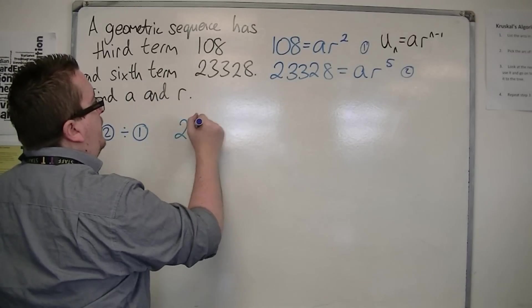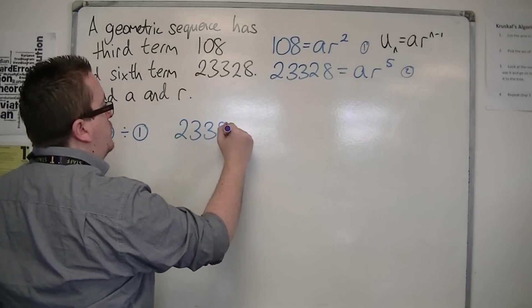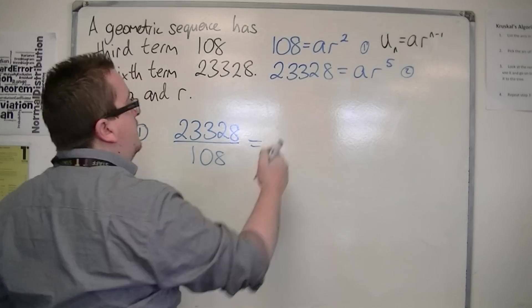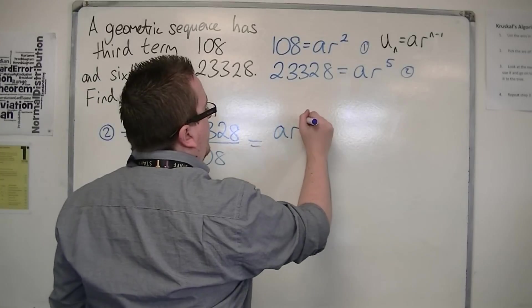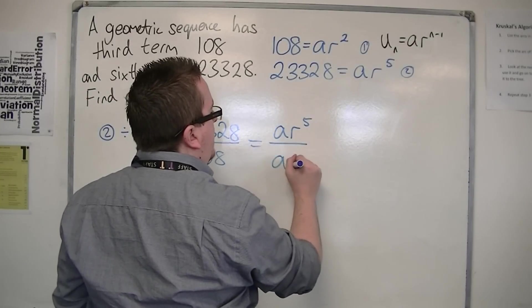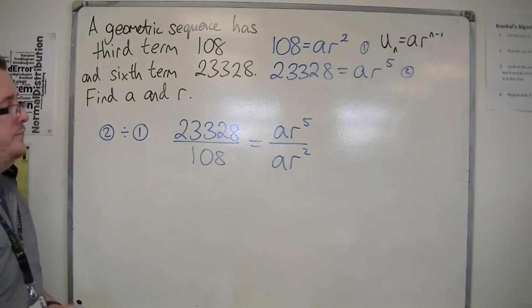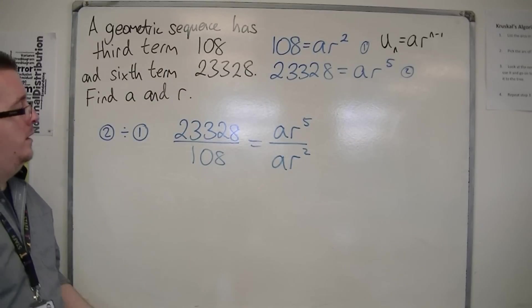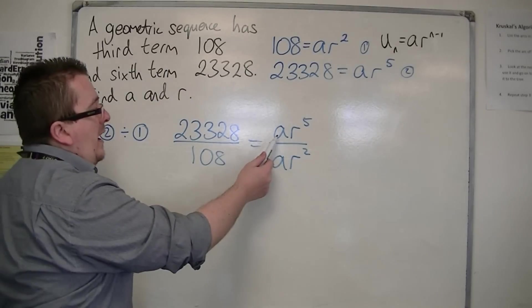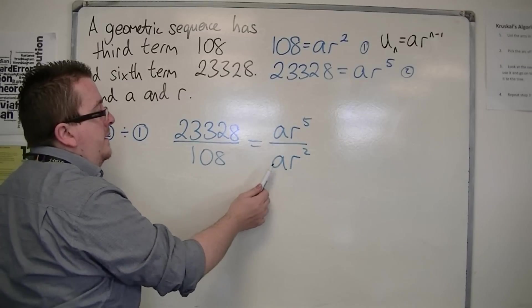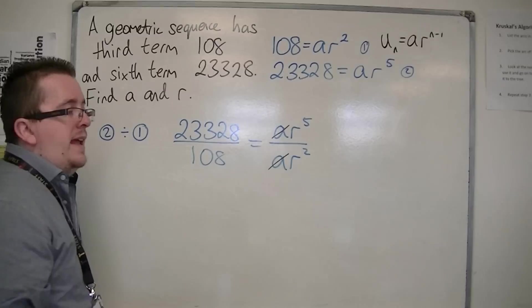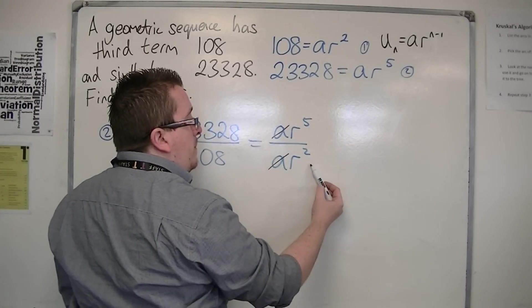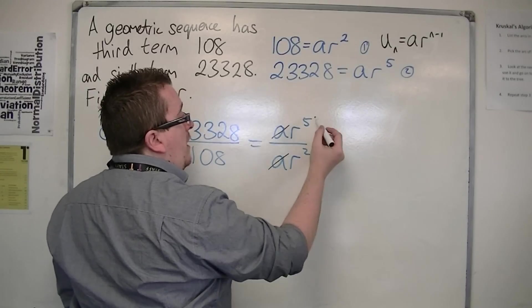So if we do equation 2 divided by equation 1, we have 23,328 divided by 108 on the left-hand side. And then on the right, we've got AR^5 divided by AR^2. That's equation 2 on the top and equation 1 on the bottom. Now, A divided by A is just 1, so they cancel each other out. I've also got R^5 divided by R^2, which is R^3.